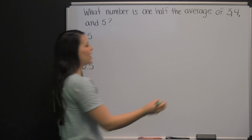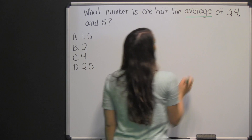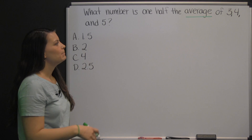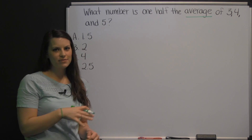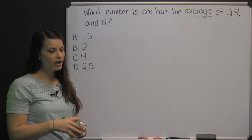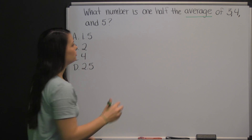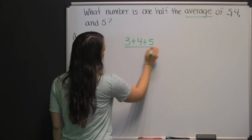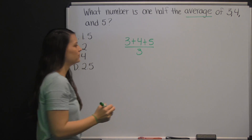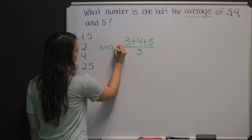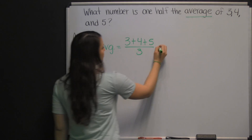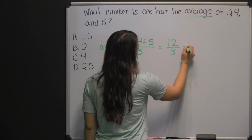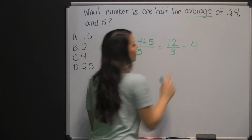First you need to know what an average is. An average is the middle of the numbers. To find the middle of your numbers, you have to take your numbers, add them together, and then divide by the number of numbers you have. That's how you find an average. So we add three plus four, which is seven, plus five, which is twelve. Twelve divided by three is four. That's the average.